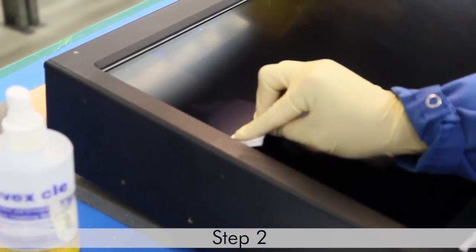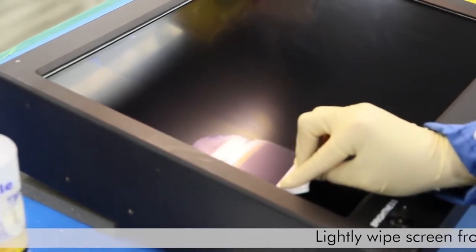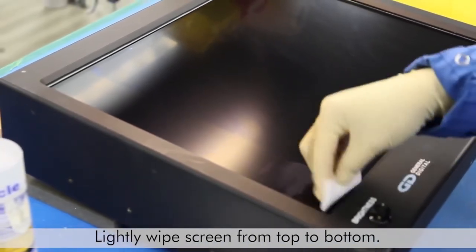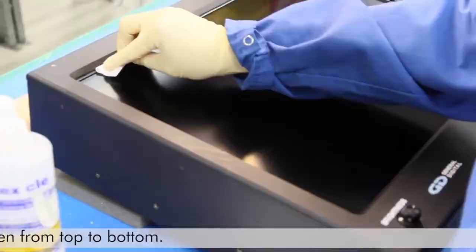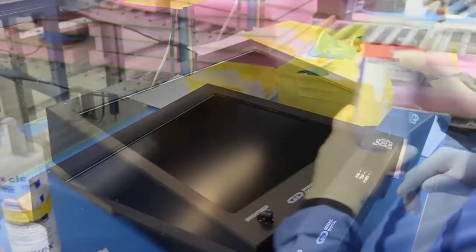Step 2: After spraying the wipe, lightly wipe the screen from top to bottom. You'll want to wipe slowly to avoid redepositing particles, but fast enough to avoid smudges.